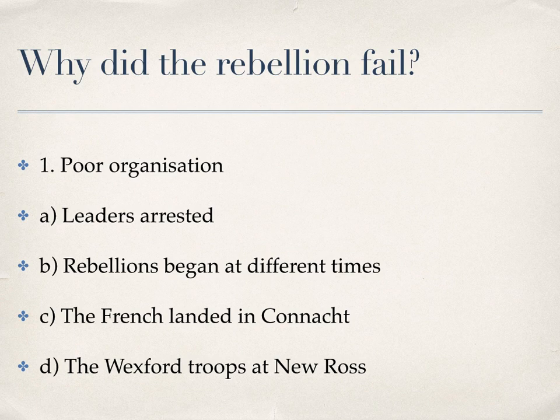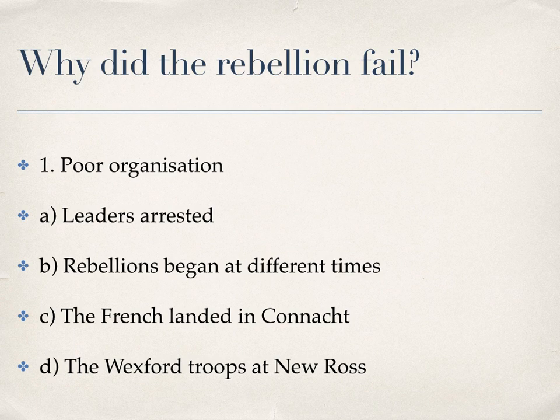So, onto the main question: why did the rebellion fail? There are four main points. The first is poor organisation. The leaders were arrested so nobody was really leading the rebellion. Rebellions began at different times — the one in Wexford began after skirmishes were put down in Meath and Dublin, and the Ulster rebellion began at the very end of the Wexford Rebellion. The two Ulster rebellions in Antrim and Down didn't even meet up and were defeated separately. The French also landed in Connacht after the rebellion had ended, on the completely opposite side of the country.